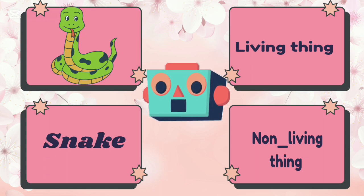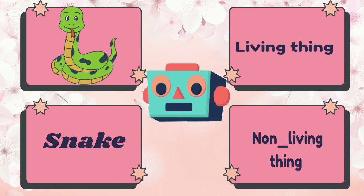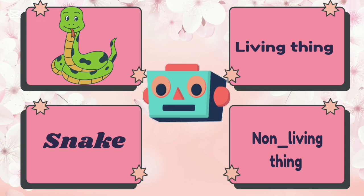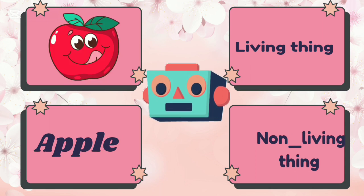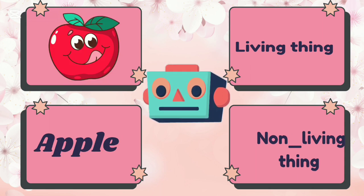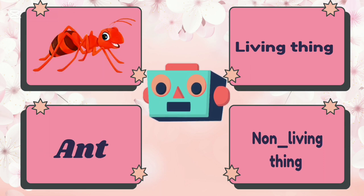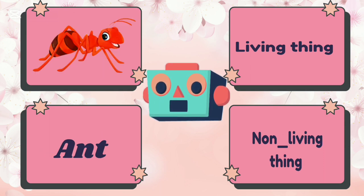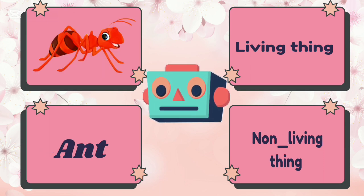Snail is living thing or non-living thing? Snail is living thing. Apple is living thing or non-living thing? Apple is non-living thing. Aunt is living thing or non-living thing? Aunt is living thing.